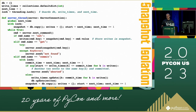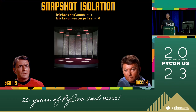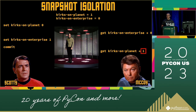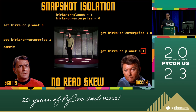What we're here for is to understand what snapshot isolation means, and I think the code is useful for that. Under snapshot isolation: Scotty starts his transaction. McCoy reads Kirk's on-Enterprise from his snapshot. Scotty finishes his transaction. McCoy reads Kirk's on-Planet and sees one, even though Scotty set it to zero. That's what snapshot isolation means — you're reading from a consistent snapshot of the data from the past. But there's no read skew.